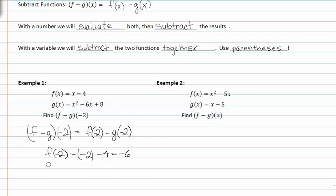And g of negative two will be negative two raised to the second power minus six times negative two plus eight. This will be four plus twelve plus eight, or twenty-four.